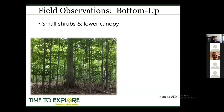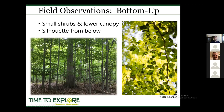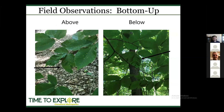From a bottom-up field perspective, there are two approaches. First, when looking for initial BLD symptoms, target the lower canopy and shrub layer. Another bottom-up approach is looking as a silhouette from below — looking up into the canopy, sunlight produces a silhouette of the banding pattern, making it very noticeable. On the same leaves, the banding pattern is very difficult to see from above, but quite obvious from below.